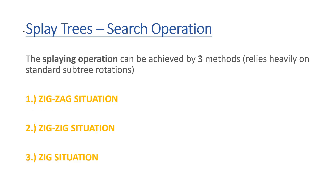The splaying operation can be achieved by three methods that rely heavily on standard subtree rotations. We have the zig-zig situation, the zigzag situation, and the zig situation.